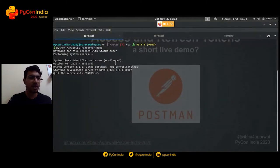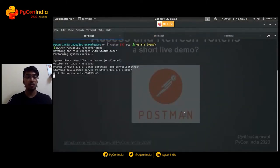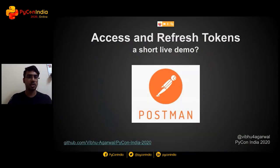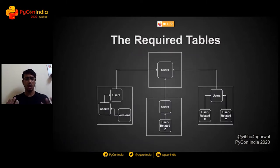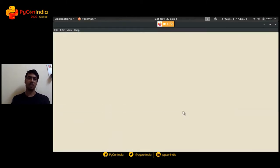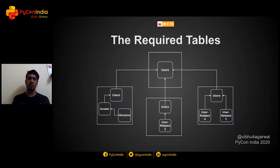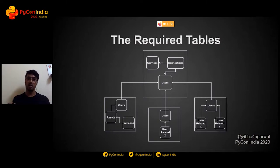That was a lot of concepts. Let's go into the demo. We have our tutorial Django server running. Let's quickly go over what database we'd require. We discussed having one single user table, and multiple services will connect their user tables to our central user table. Along with that, we'll also store information about which services or products we offer, and which users are connected to which services.